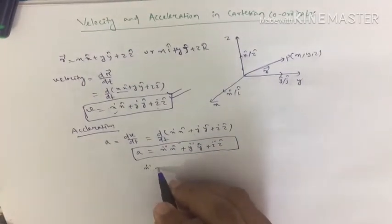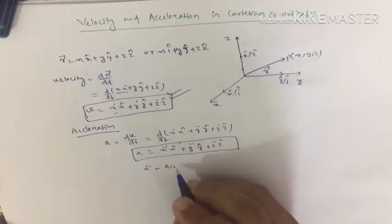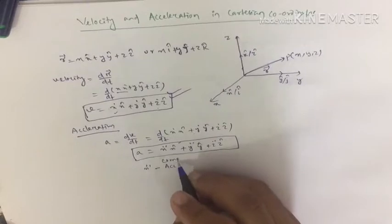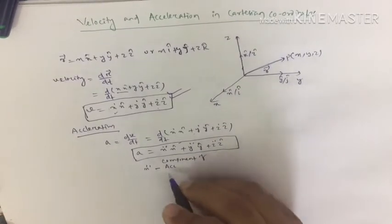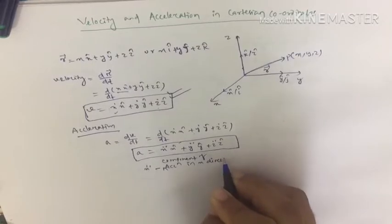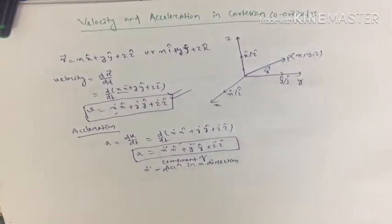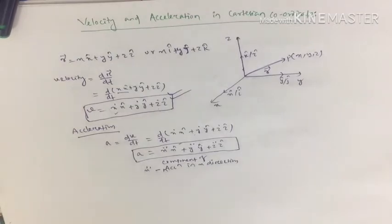Here ẍ represents the component of acceleration in the x-direction, ÿ represents the component of acceleration in the y-direction, and z̈ represents the component of acceleration in the z-direction, which is very simple to derive.